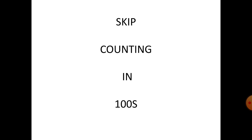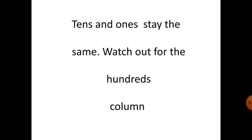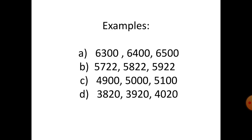Skip counting in hundreds: the tens and ones stay the same — watch out for the hundreds column. Example A: six thousand three hundred, plus one hundred: six thousand four hundred, plus one hundred: six thousand five hundred. Number B: five thousand seven hundred and twenty-two, five thousand eight hundred and twenty-two.